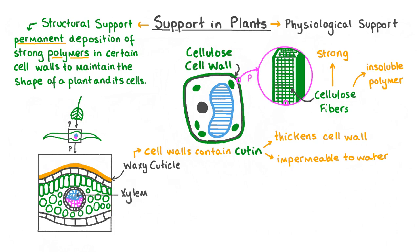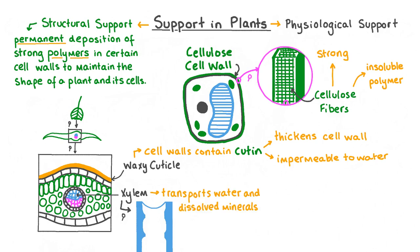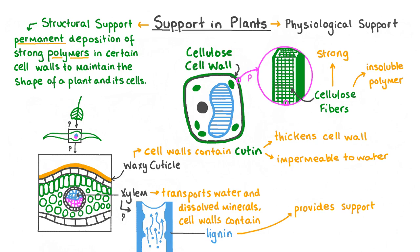The cells highlighted in our diagram make up a tissue called the xylem. The xylem is part of the plant's vascular transport system, responsible for transporting water and minerals from the roots to the rest of the plant. The cell walls of xylem vessels contain a polymer called lignin. Lignin is a really strong polymer and it provides additional support to the xylem by making its vessels more rigid and helping them remain upright to form a continuous column of water. Lignin is impermeable to water, which reduces the chances of water leaking out of the vessels, increasing the efficiency of water transport.